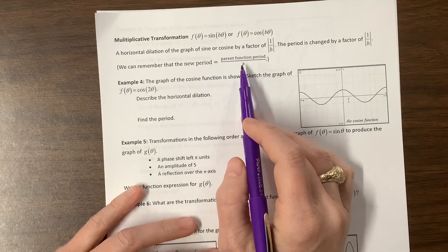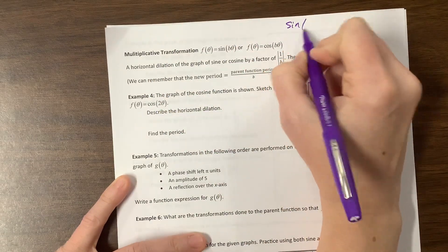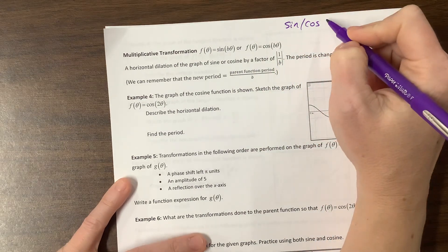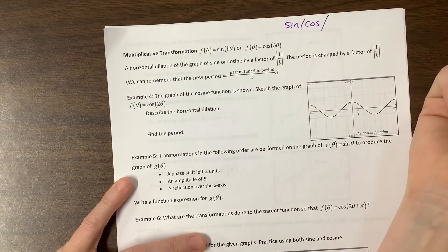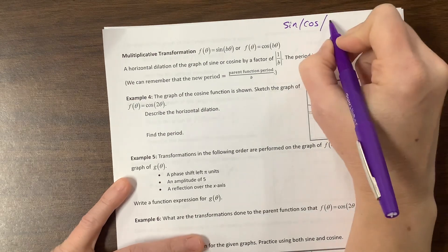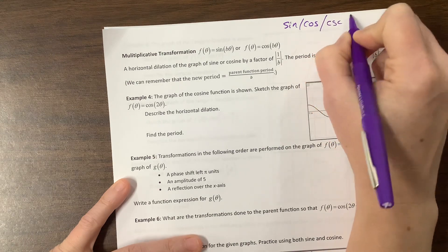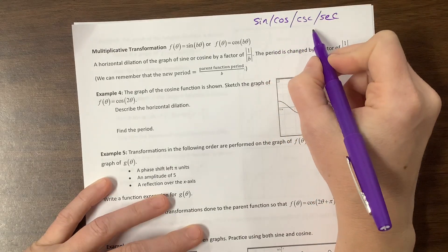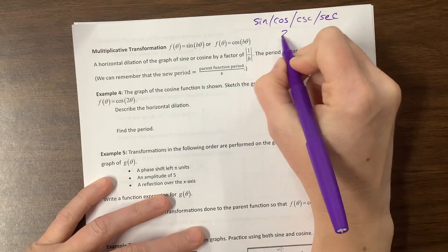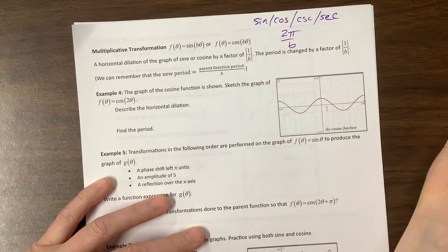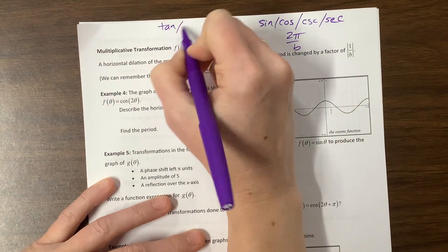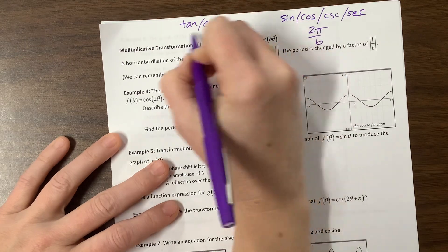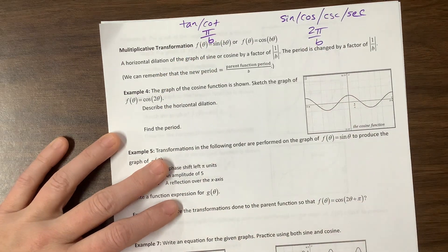But okay. And so the period is changed by a factor of 1 over b. What I like to point out is that that means our new period is equal to the parent function period over b. So what we would typically say, with sine, with cosine, and there's two others that have a parent function period of 2 pi. If you don't know what those are yet, go back and watch my graphing from sine and cosine videos. But it's cosecant and secant. Those four parent functions, their period, the parent function period is 2 pi. So the new period will always be 2 pi over b. Tangent and cotangent, however, have a period of, their parent function has a period of pi. So their new period would be pi over b.